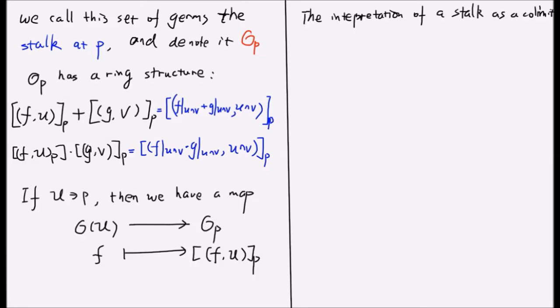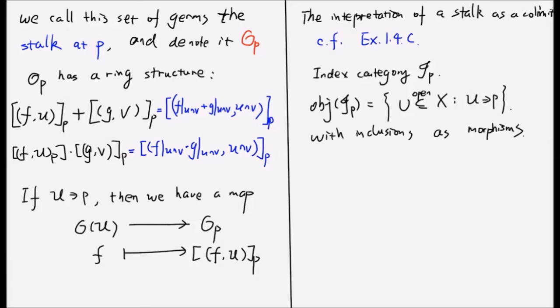Here, we need to recall the exercise 1.4.c. We take an index category I_p. The objects in this category are all open subsets of X containing p. And the morphisms between those objects are just inclusions if one is containing another. We define a functor from this category I_p to the category of sets by sending each open subset U to the ring of smooth functions O(U).